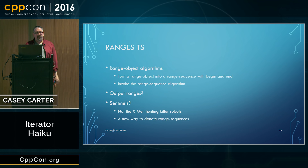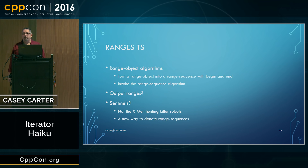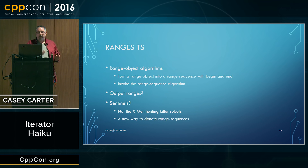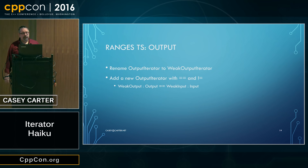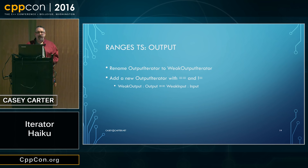We also wanted to have sentinels in the Ranges TS, which you've heard about if you've seen Eric Niebler's talks. Sentinels are not X-Men hunting killer robots. Sentinels are a new way to denote range sequences. So if we want to have output ranges, we've got the problem that output iterators don't have an equality operation. So we renamed the output iterator concept to weak output iterator and added a new strong output iterator concept that has equality and inequality.